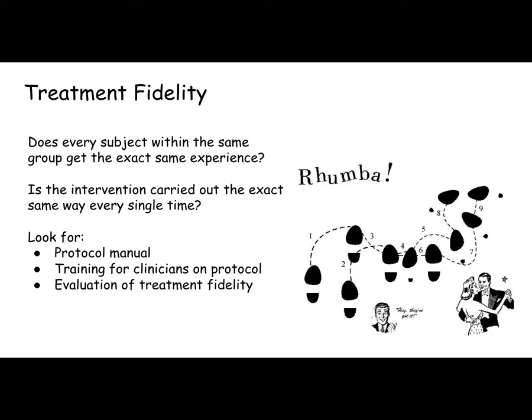A term you may see in some research papers when they're describing the intervention is treatment fidelity. Treatment fidelity refers to whether every subject within the same experimental group got the exact same experience. So was the intervention carried out the exact same way?